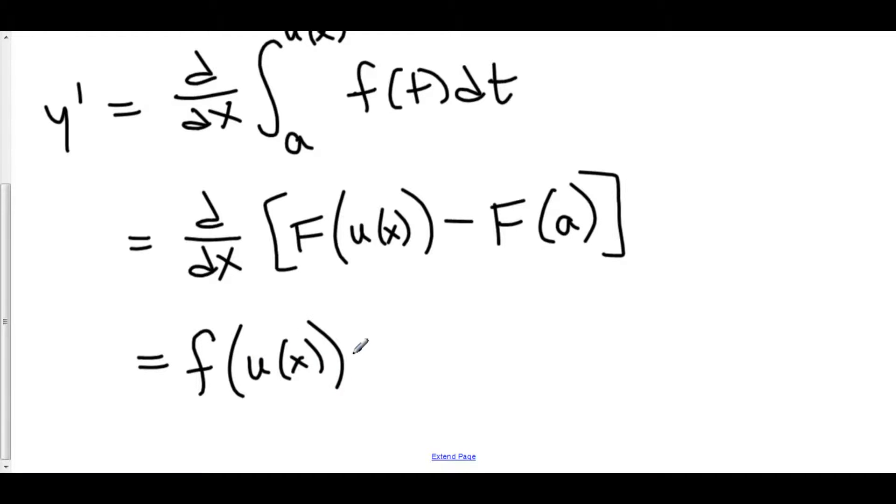Then we multiply by the derivative of the stuff, so that's u'(x). And since a is a constant, the derivative of F(a) is zero, so that goes away.